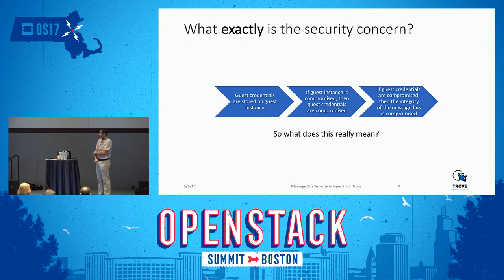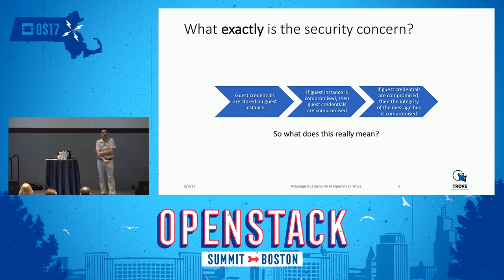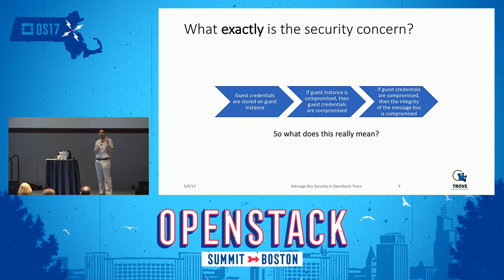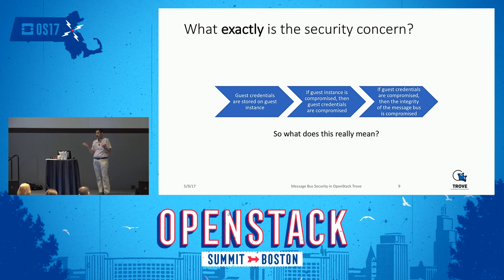Trove has always advised using a different message bus for Trove, partly because Trove is often deployed in a Nova VM rather than as part of the control plane — you don't want a VM running in tenant space talking back to your control plane message bus. But even with an independent message bus, there's still an API service, a task manager, multiple guest agents, and a conductor all listening on that bus. If the guest instance is compromised and you have the guest credentials, the message bus is compromised. That is the fundamental issue we're trying to solve.